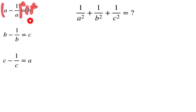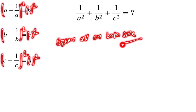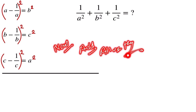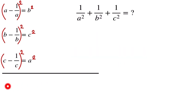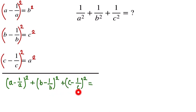To find this, we square both sides of all three equations, then add them together. So we get: (a − 1/a)² + (b − 1/b)² + (c − 1/c)² = a² + b² + c².